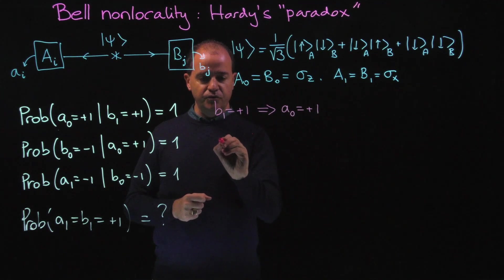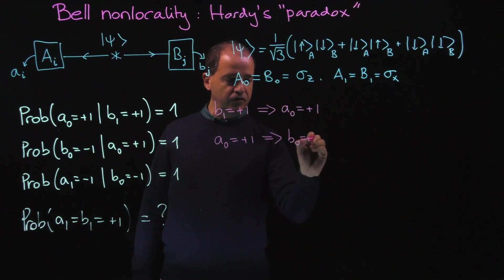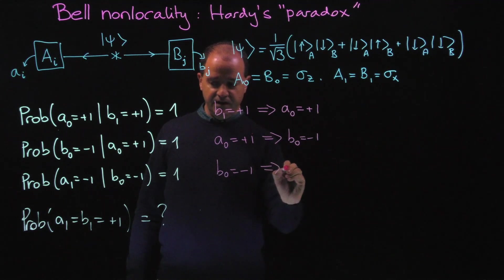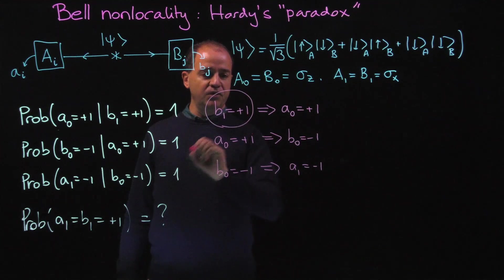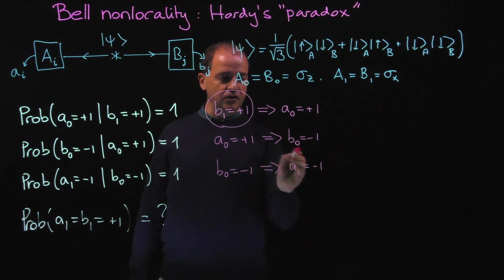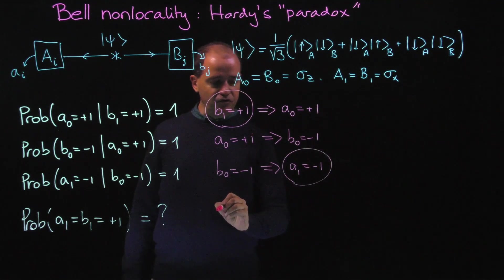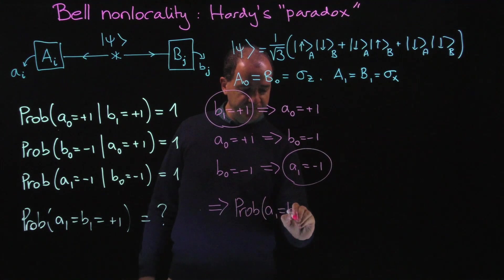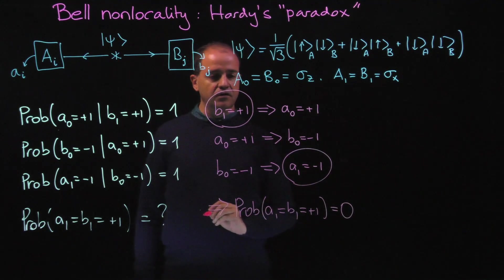From the second equation, we see that A0 equals plus 1 implies B0 equals minus 1, and B0 equals minus 1 implies A1 equals minus 1. Therefore, if we follow this classical logical chain, B1 equals plus 1 implies A1 equals minus 1. It will never happen that A1 and B1 are both plus 1. So this probability should be 0, according to classical logic.